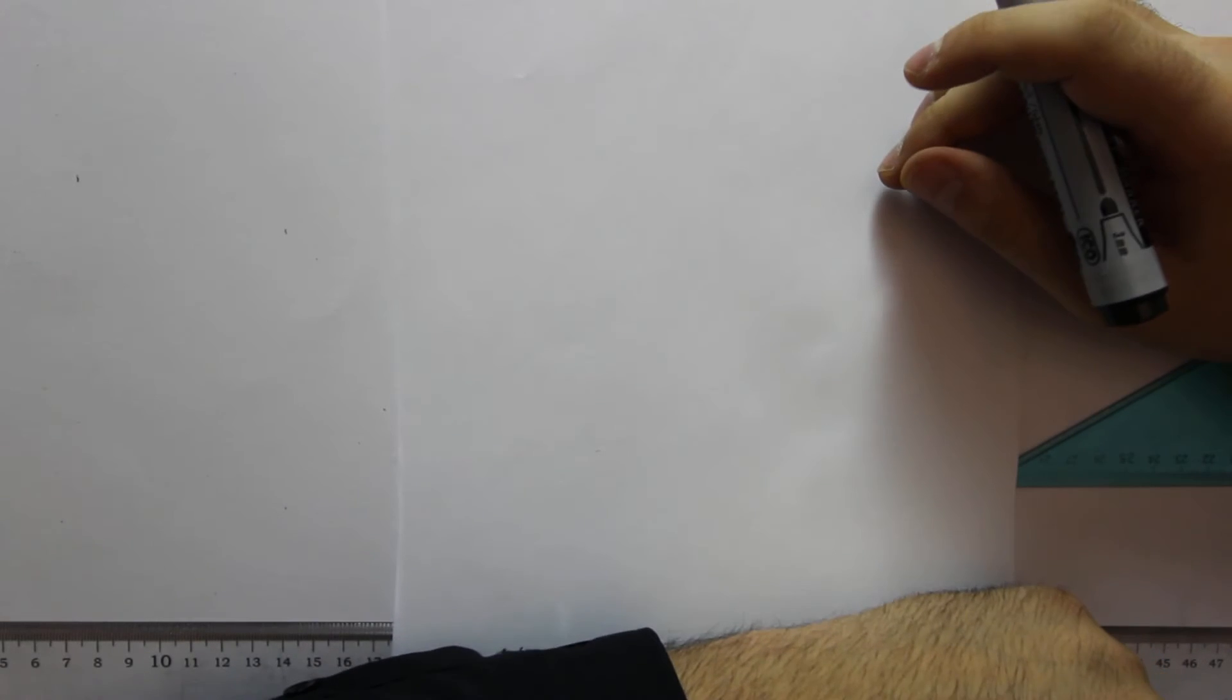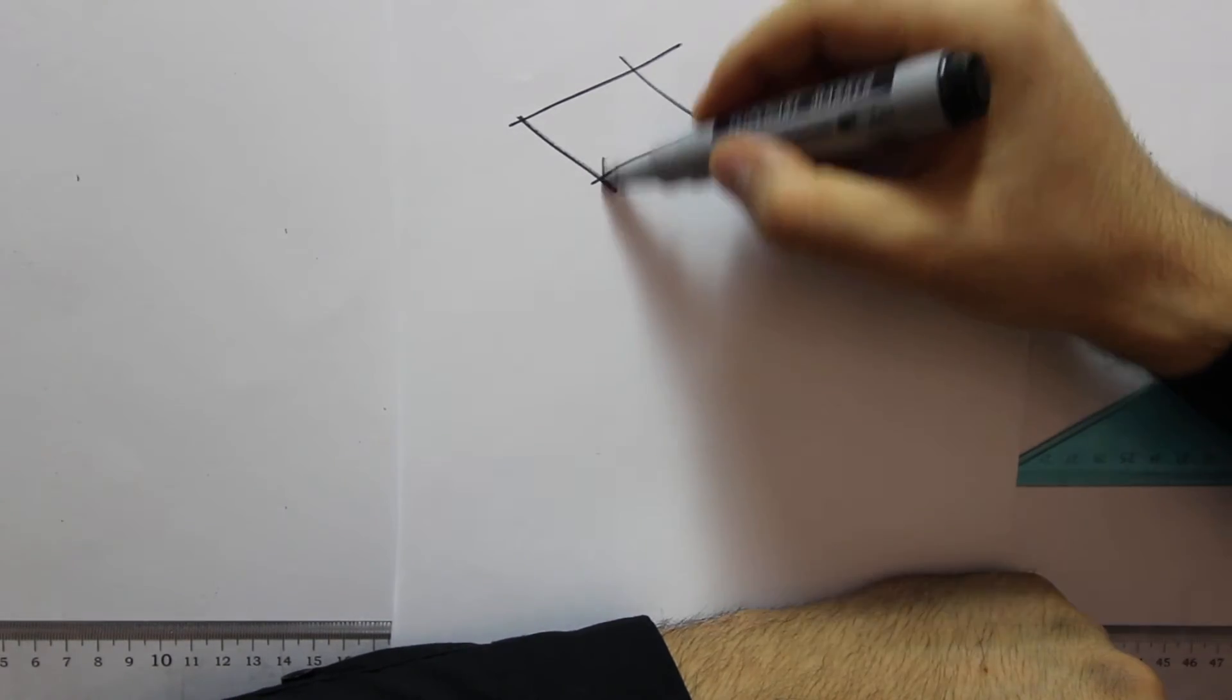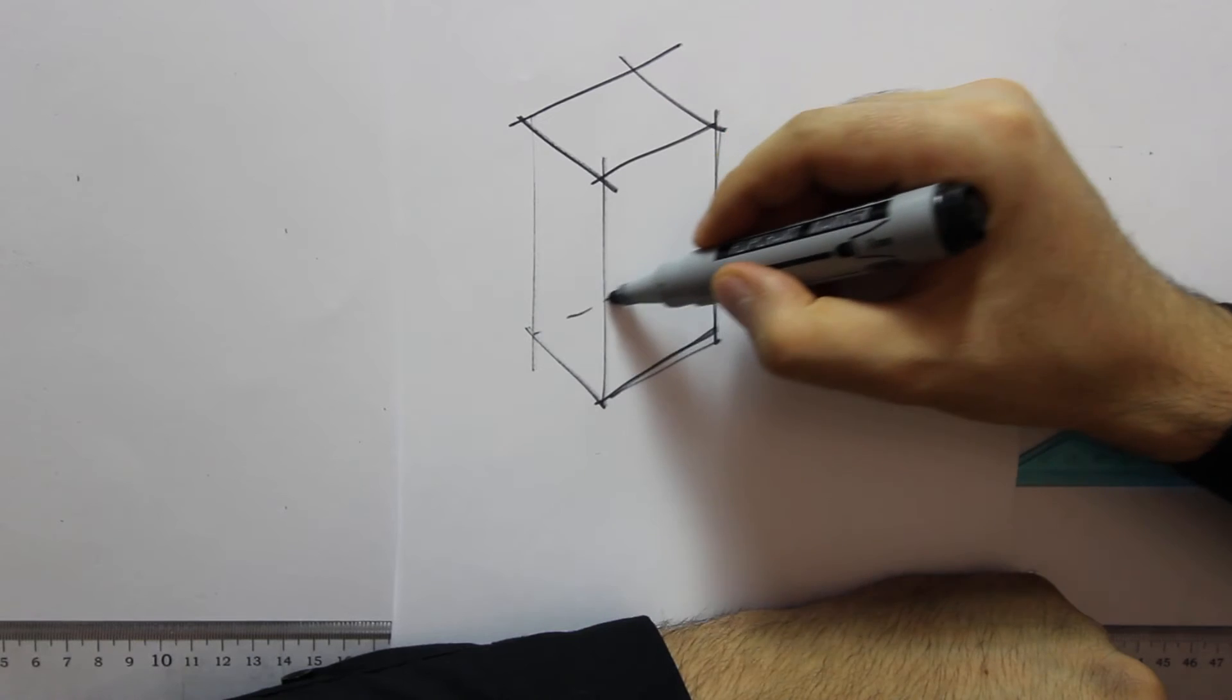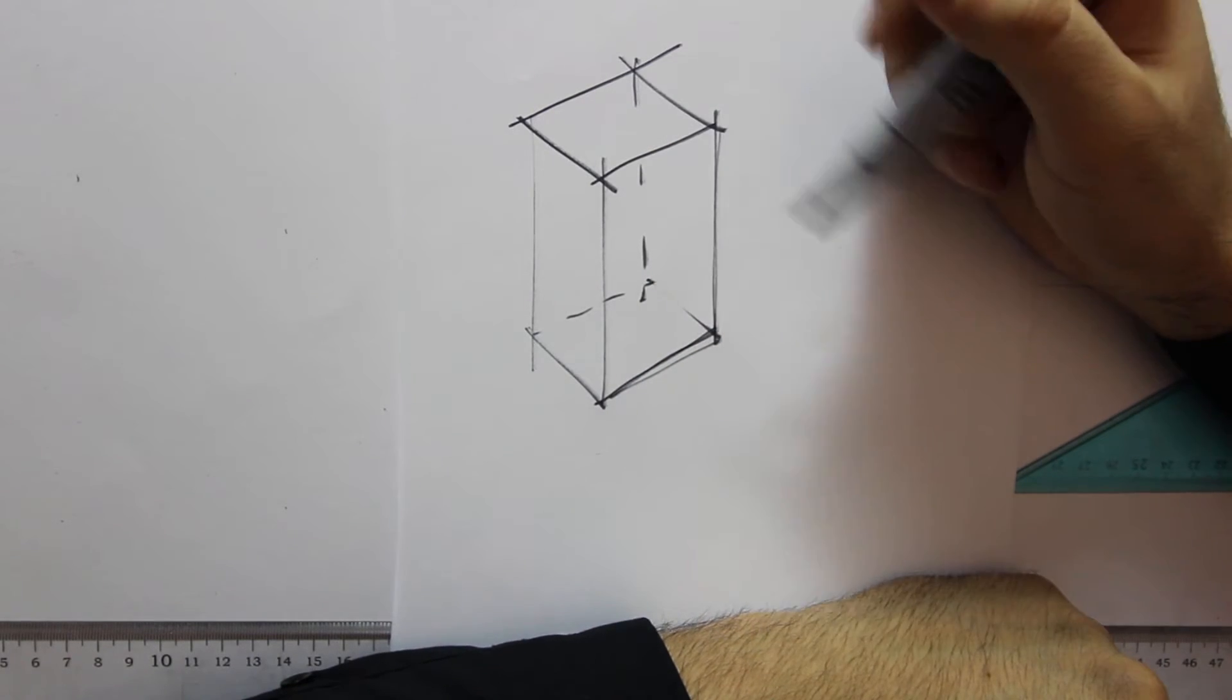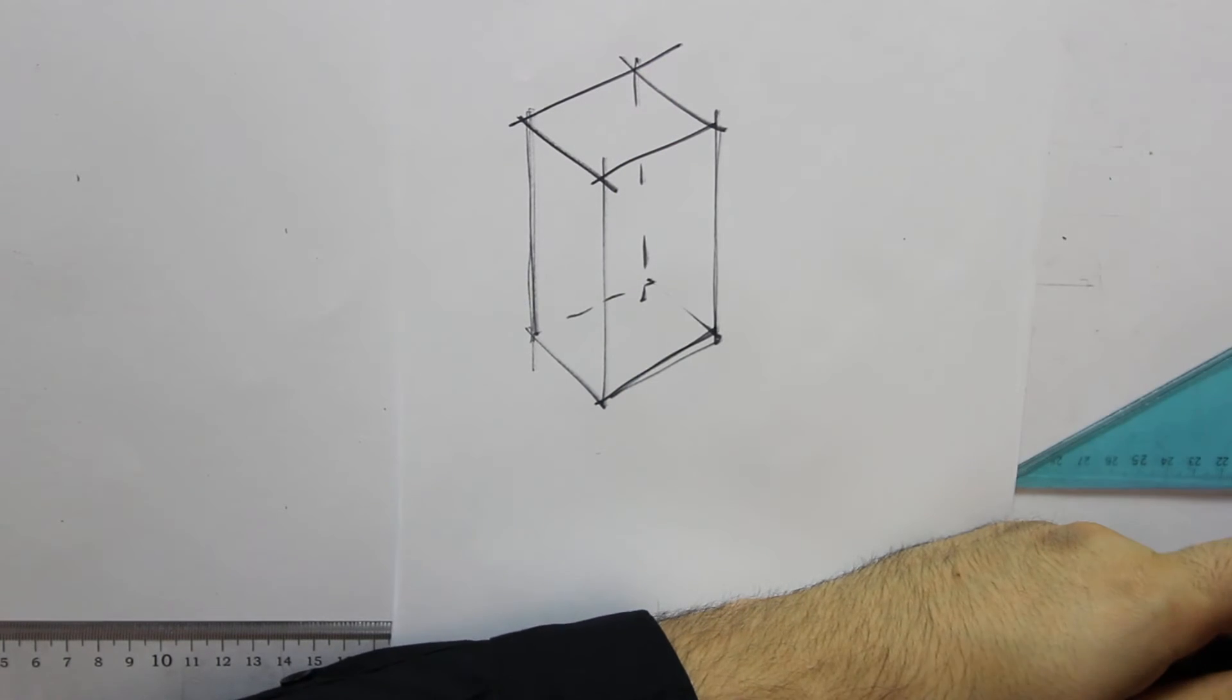Right, so let's see how the shadows work for axonometrics. Let's take this standard box in an axonometric projection. All lines are parallel. Let's consider how this would look like in shadow and lighting.